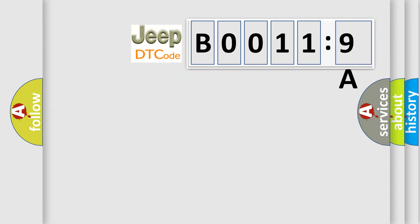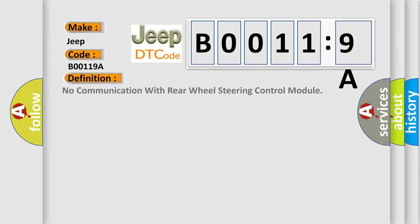So, what does the diagnostic trouble code B00119A interpret specifically for Jeep car manufacturers? The basic definition is: no communication with rear wheel steering control module.